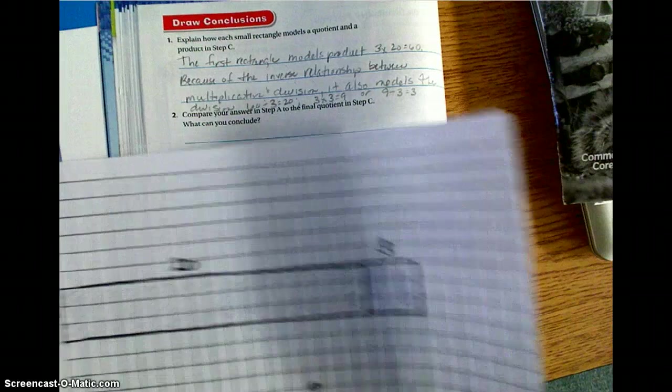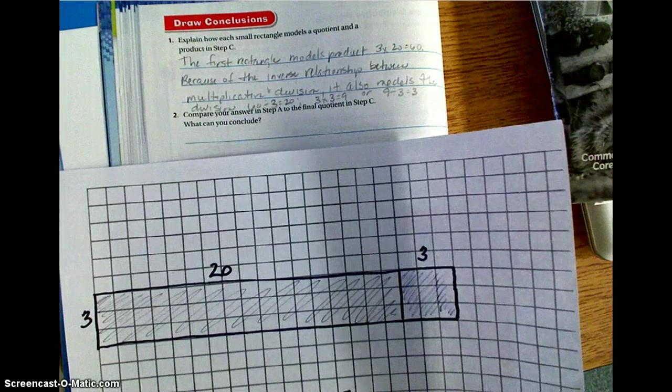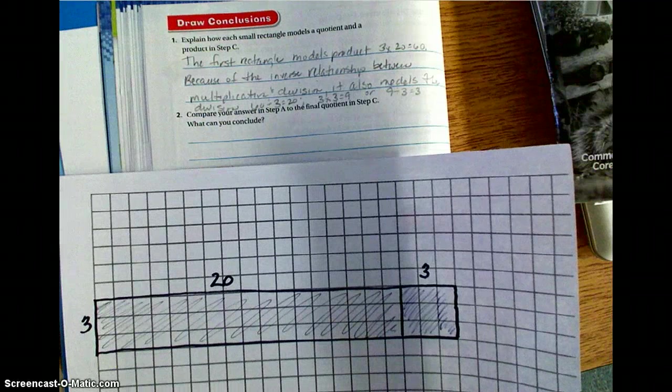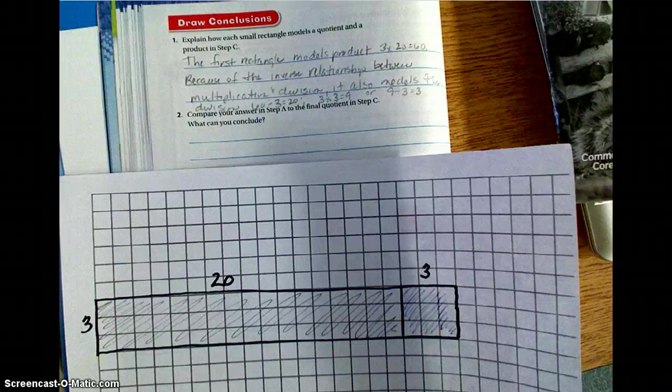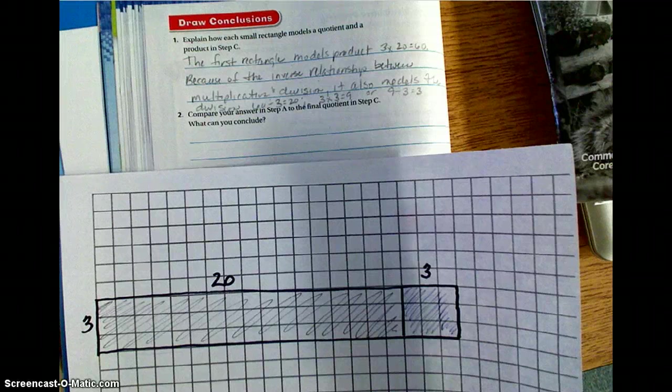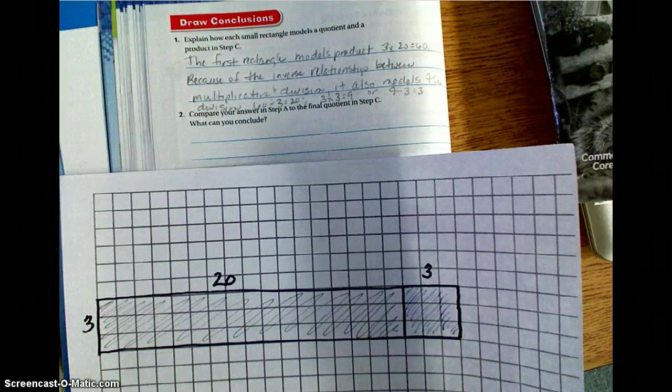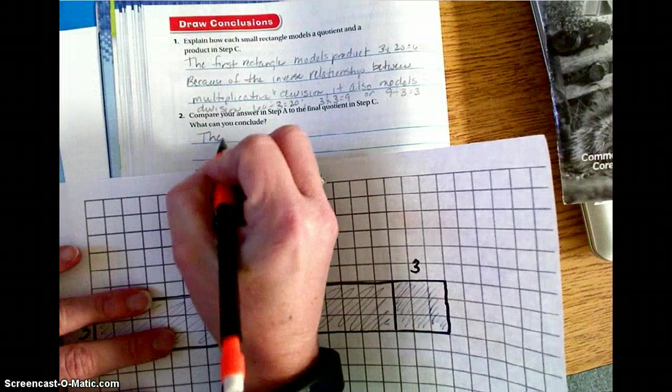Number two, compare your answer in step A to the final quotient in step C. What can you conclude? Well, we can conclude that our answer in step A and the final quotient in step C, they're the same. They are the same. So, they are the same.